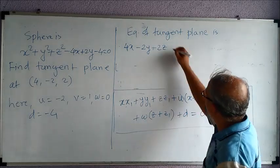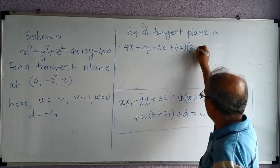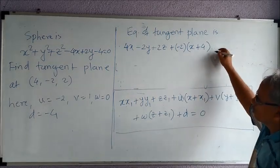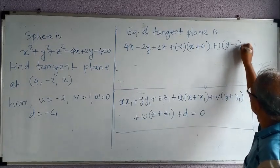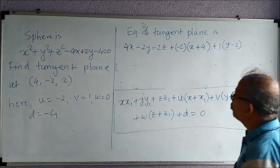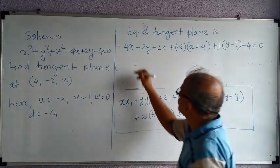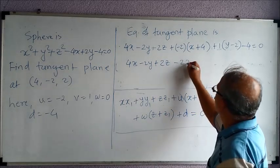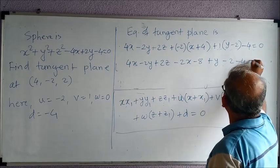Plus u into bracket. Now what is u? It is -2. Into bracket (x + 4) plus v into, so v is 1, (y - 2). Now w is 0, so I am not going to write down that term because it will be 0. And d = -4. So let us simplify this. So 4x - 2y + 2z - 2x - 8 + y - 2 - 4 = 0.